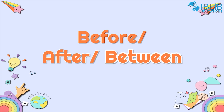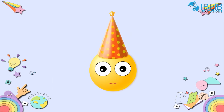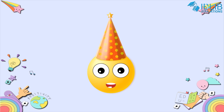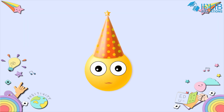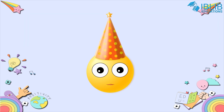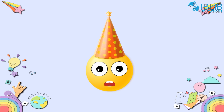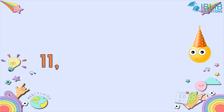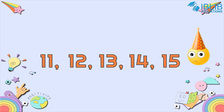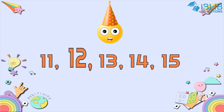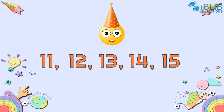Before, after, between. Hello friends! Let's learn about before, after, and between numbers. When we talk about numbers, the number that comes later in the counting is said to be after. For example, if we have 11, 12, 13, 14, 15 — what comes before 12? As we can see, 11 comes before 12, and after 12 comes 13.